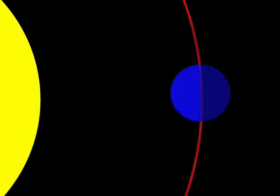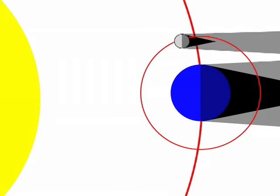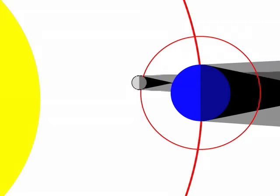The Sun shines on both the Earth and Moon, and both the Earth and Moon cast shadows opposite the direction of the Sun. A solar eclipse is what we see when a shadow from the Moon falls on the Earth.